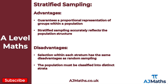For stratified sampling, there are two advantages: it guarantees a proportional representation of groups within a population, and it accurately reflects the population structure. The two disadvantages are that selection within each stratum shares the same disadvantages as random sampling, and the population must be classified into distinct strata.